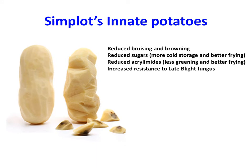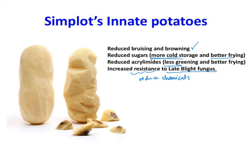Like Arctic apples, Simplot's Innate potatoes have reduced bruising and browning caused by a polyphenol oxidase enzyme. In addition to that, these potatoes have stacked traits — more than one genetically engineered trait in the plant. So: reduced bruising and browning, also reduced sugars, which allows longer-term cold storage. When fried, these potatoes will not turn as brown — they'll stay golden. These potatoes are also engineered to have reduced acrylamide levels, which results in less greening of the potato tubers. Further, they have increased resistance to a very common potato fungus called late blight, and with that increased resistance we can reduce chemical spraying applied to the potato fields. So another example of a genetically engineered crop.